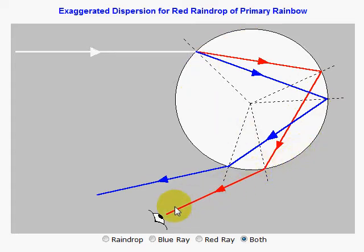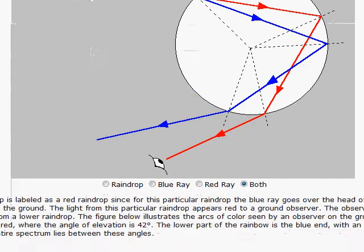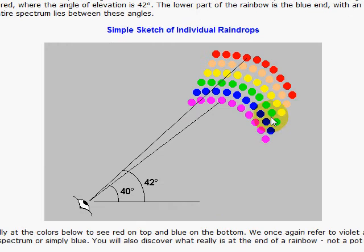showing a red beam going into the eye, and this blue beam will actually come from a different droplet to get into your eye. So when you look at a rainbow, you're seeing different droplets.